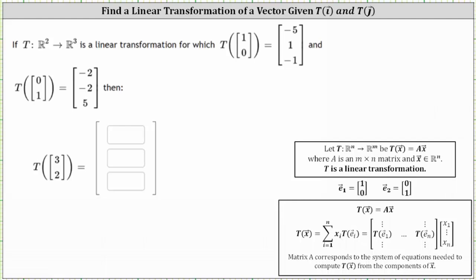If the transformation from R2 to R3 is a linear transformation for which T of (1, 0) equals (-5, 1, -1) and T of (0, 1) equals (-2, -2, 5), then what is the transformation of the vector (3, 2)?